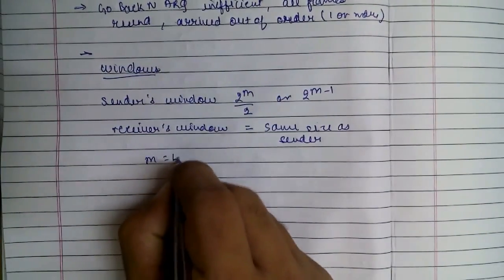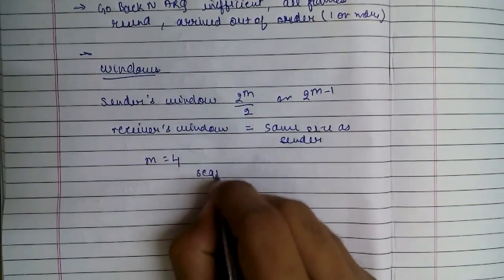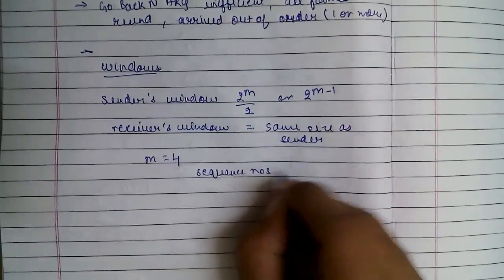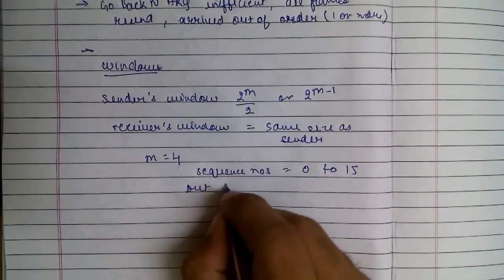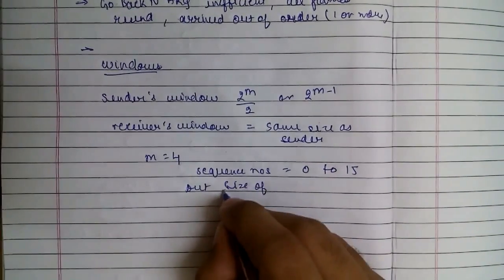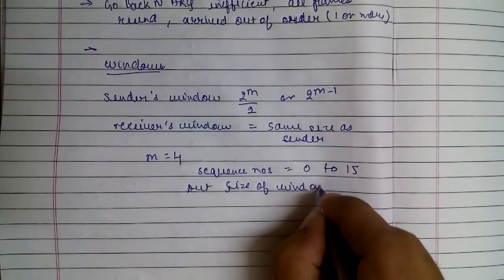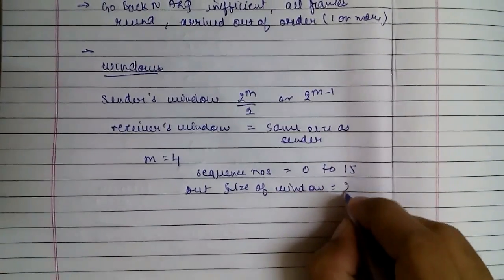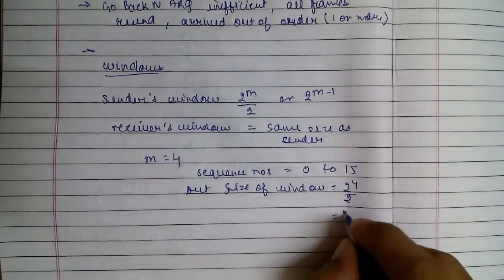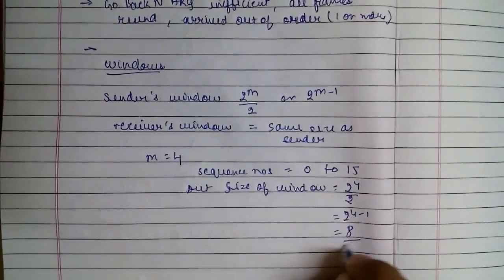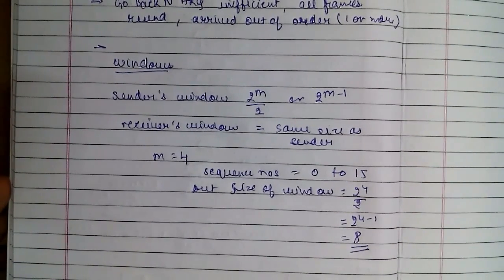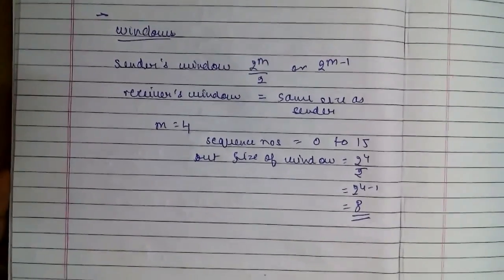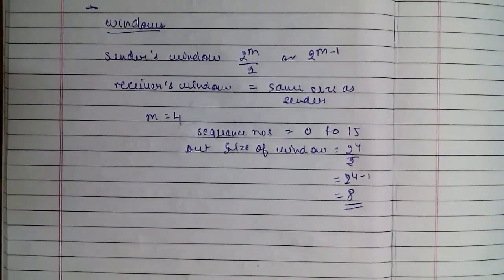So if the bits allowed in the header M equal to 4, then the sequence numbers will range from 0 to 15. But the maximum size of the window will be 2 raised to 4 by 2, which is 8. This reduces the efficiency but it also helps in creating less duplicates.